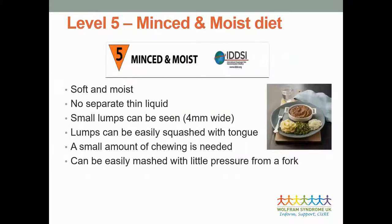Level five is a minced and moist diet - soft and moist with no separate thin liquid, and some small lumps up to four millimetres wide. Picture the prongs of a fork - the little lumps would fit through them and can be easily squashed with the tongue. A little chewing is needed but the texture is still very soft.